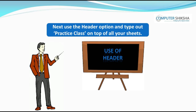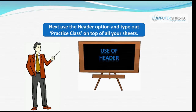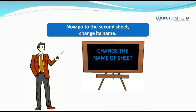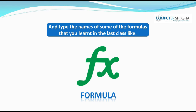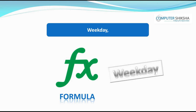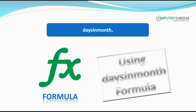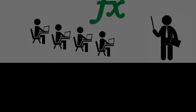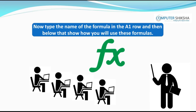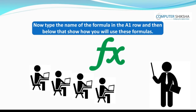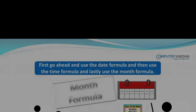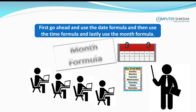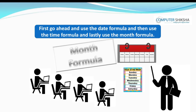Look at your spreadsheet document and say on which sheet you are currently working and what is its name — sheet 1, sheet 2, sheet 3, etc. Now go to the second sheet, change its name, and type the names of some formulas you learned in the last class, like weekday, isleapyear, days in month, weeks in year, etc. Type the formula name in row A1, then show how you will use these formulas. Use the date formula, then the time formula, and lastly the month formula.